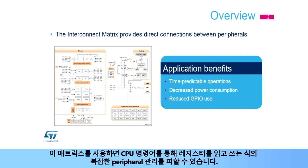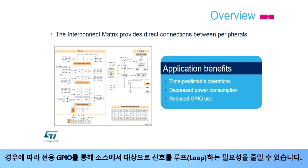This matrix avoids complex management of peripheral communications through reading or writing registers using CPU instructions. In some cases, it reduces the need to loop a signal from a source to a destination through a dedicated GPIO.